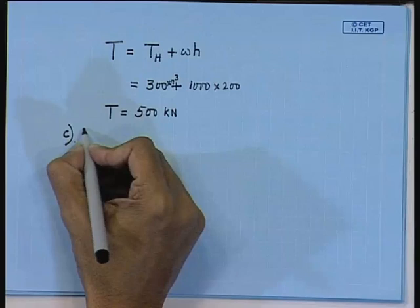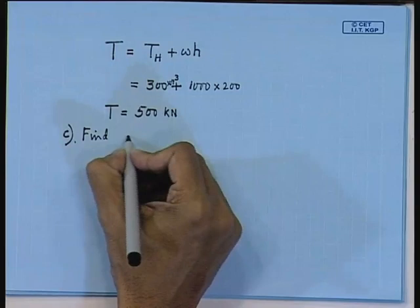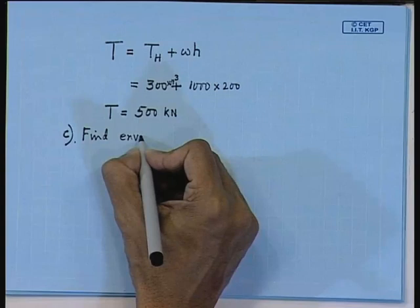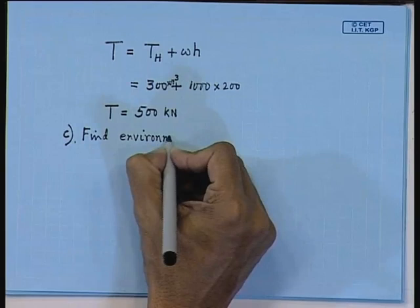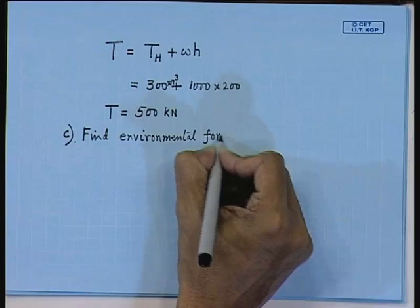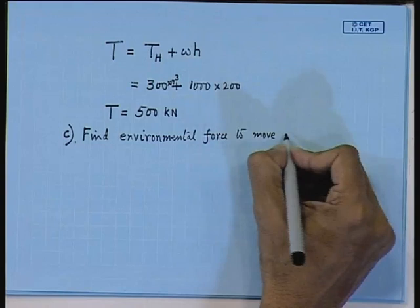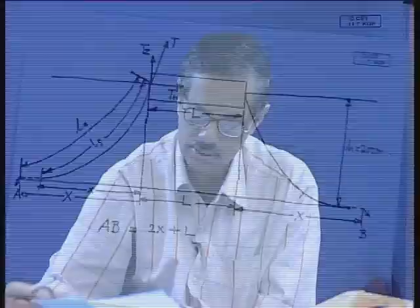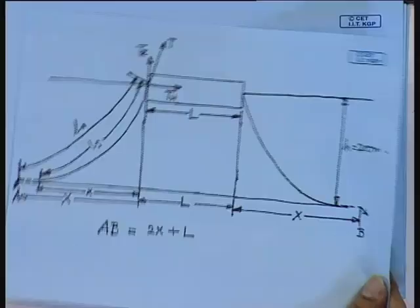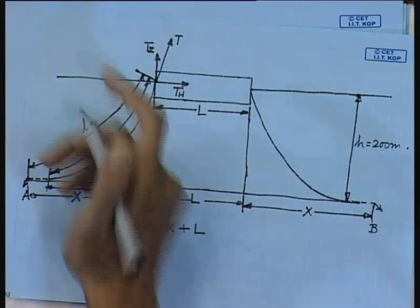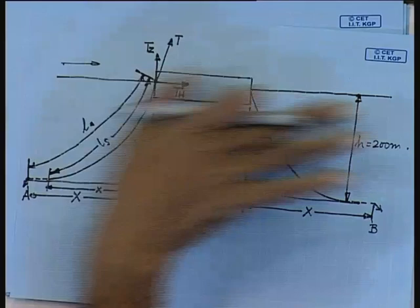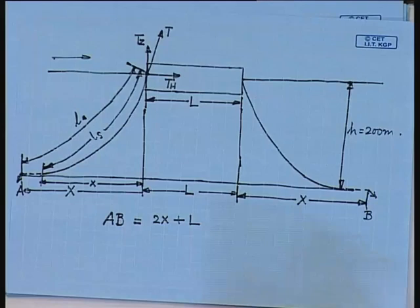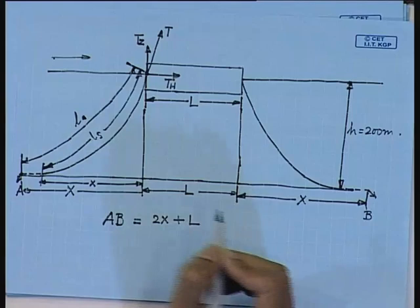What happens when you are trying to move anchor A? This is the situation. Let us say there is no environmental force — static case. Now, because of a rise in wind or waves the ship has started moving in this direction. There is a slack in the line: slack is L minus L_s. This will try to become taut.